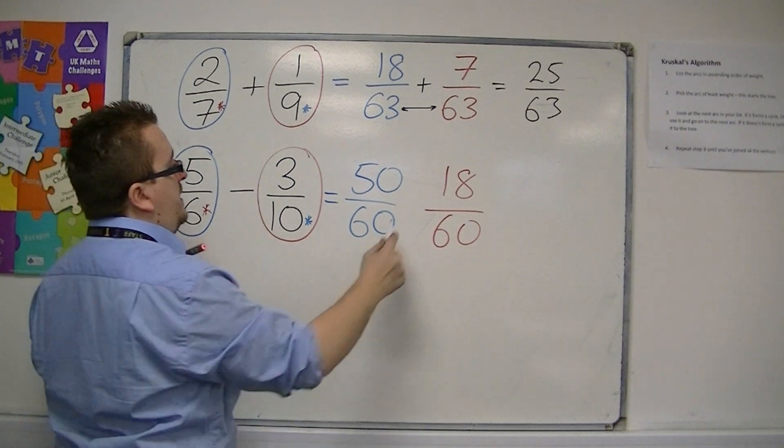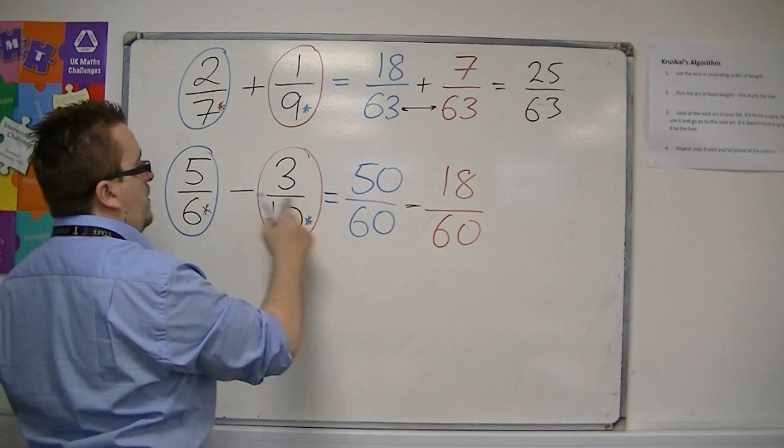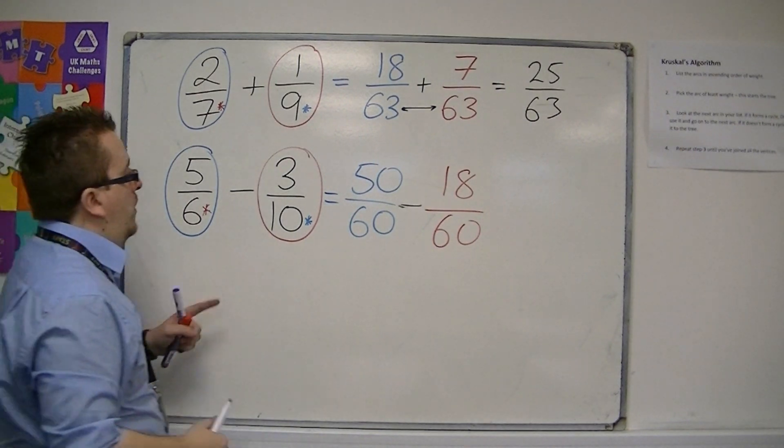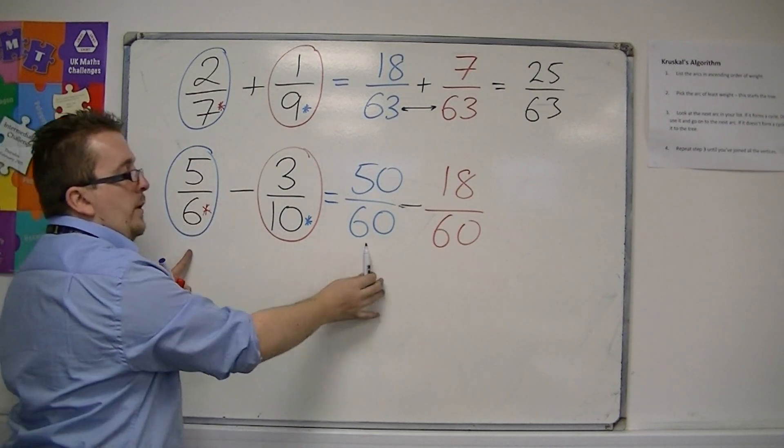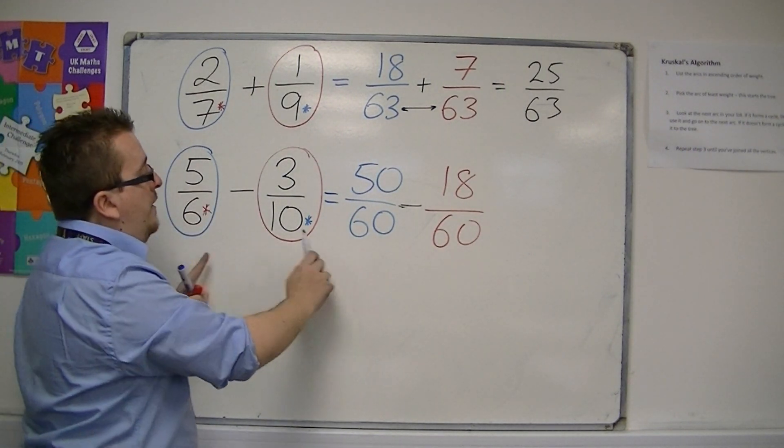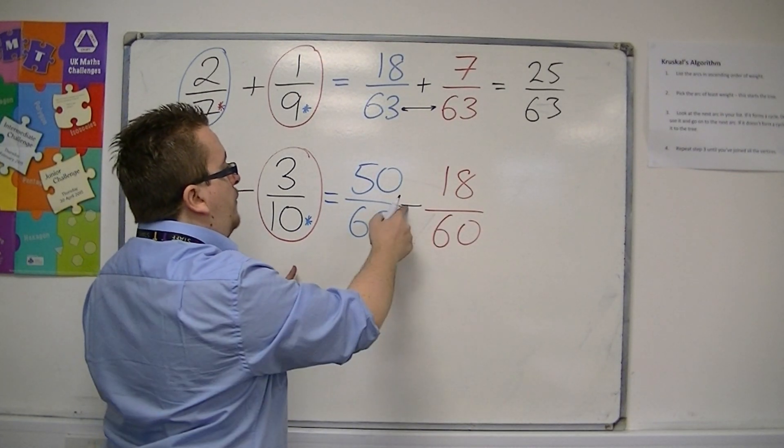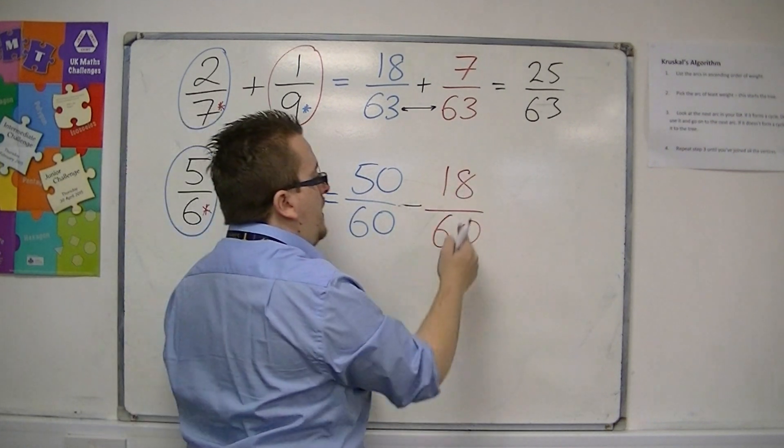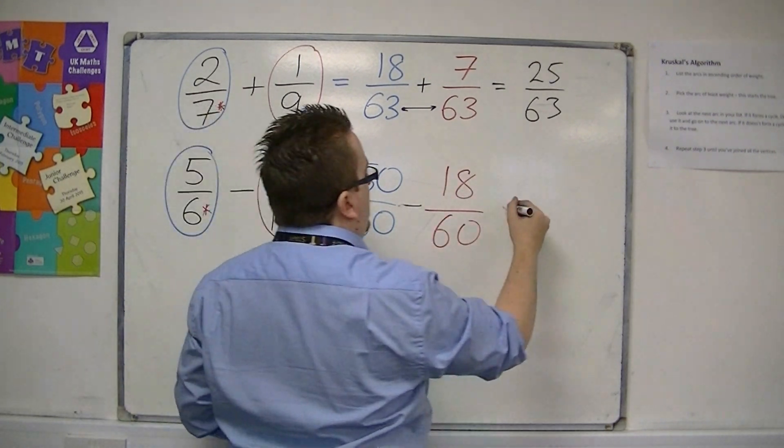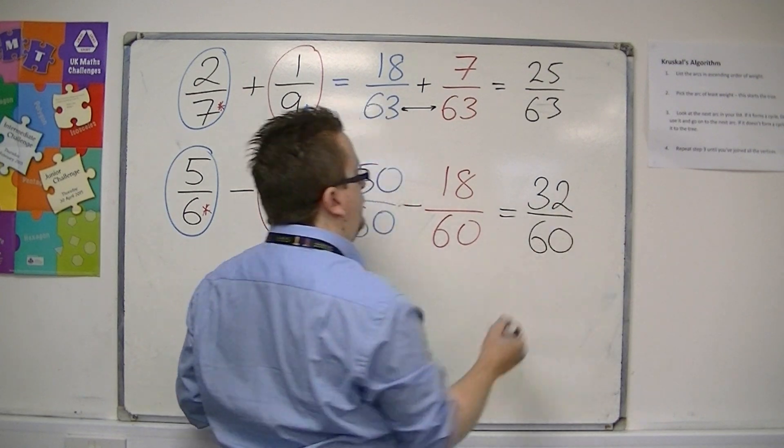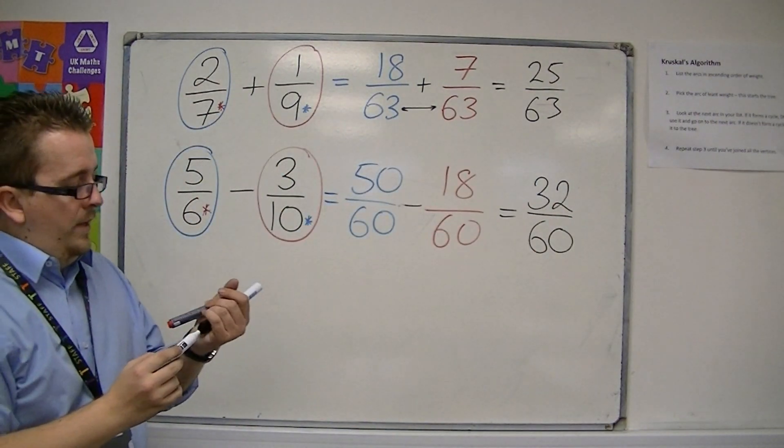And I've been told that I need to subtract these, because it's a subtraction there. So now I've got 5 sixths is equivalent to 50 over 60. 3 tenths is equivalent to 18 over 60. So 50 over 60 take away 18 over 60 is 32 over 60. So now, with our knowledge of simplifying fractions,